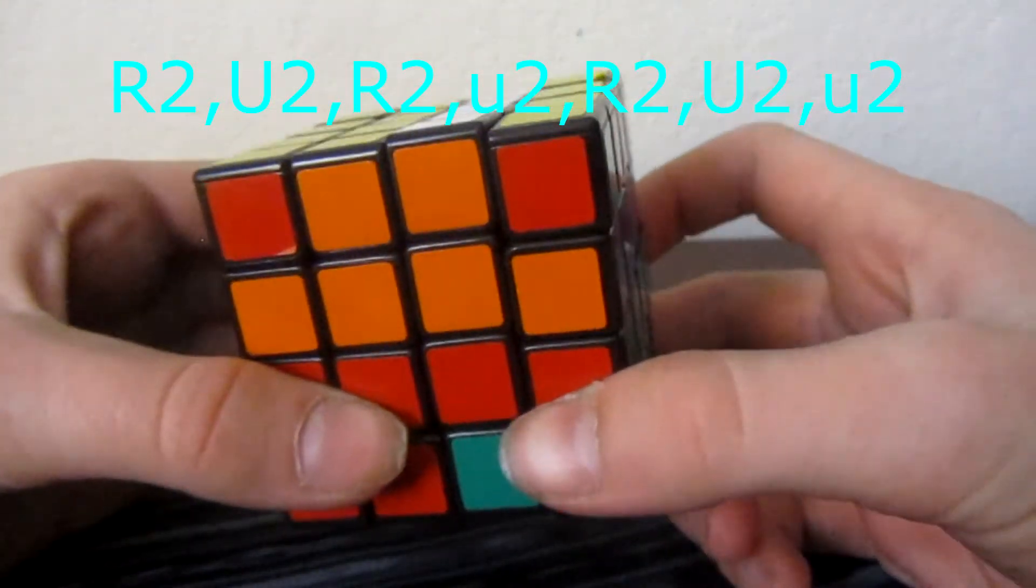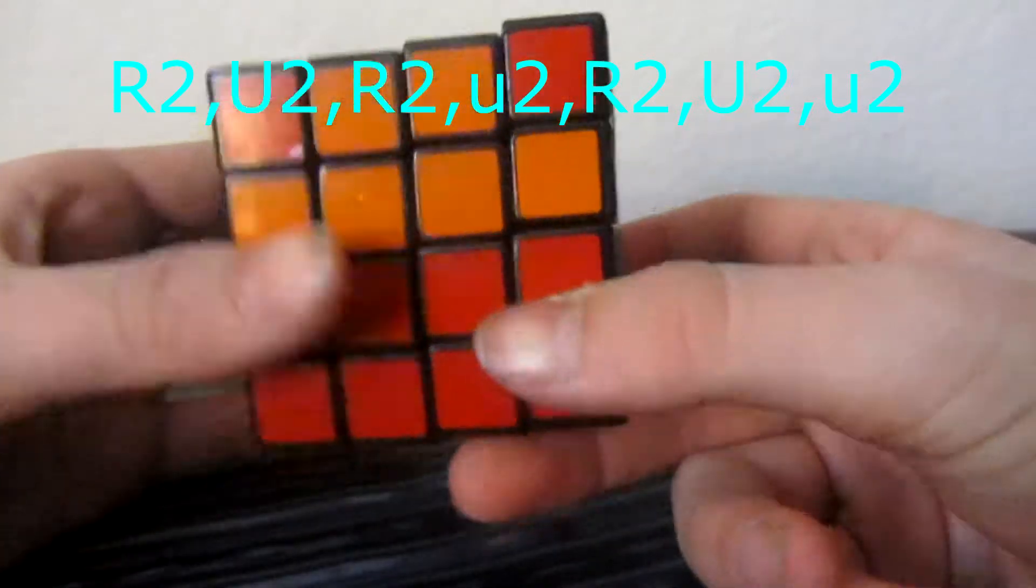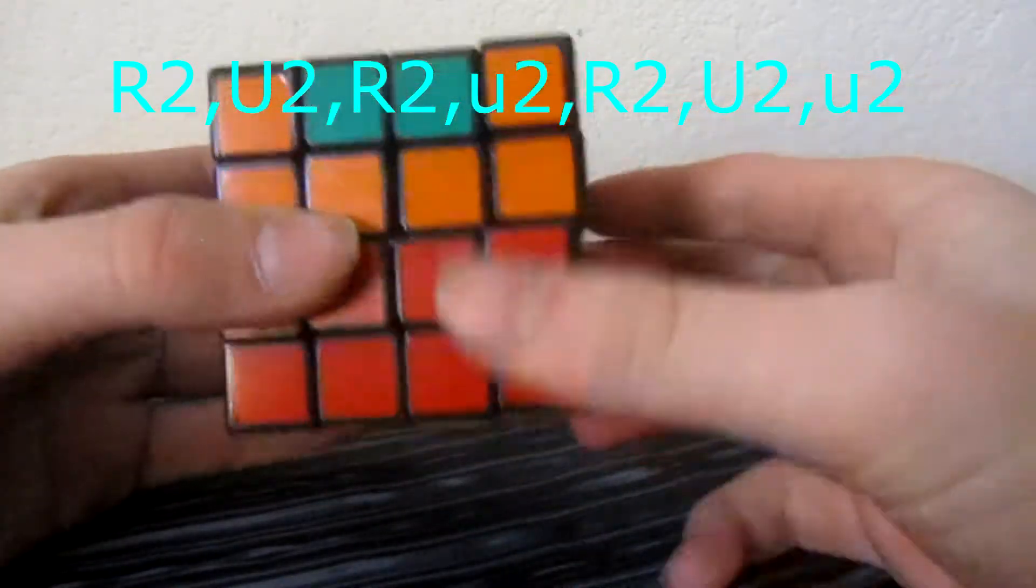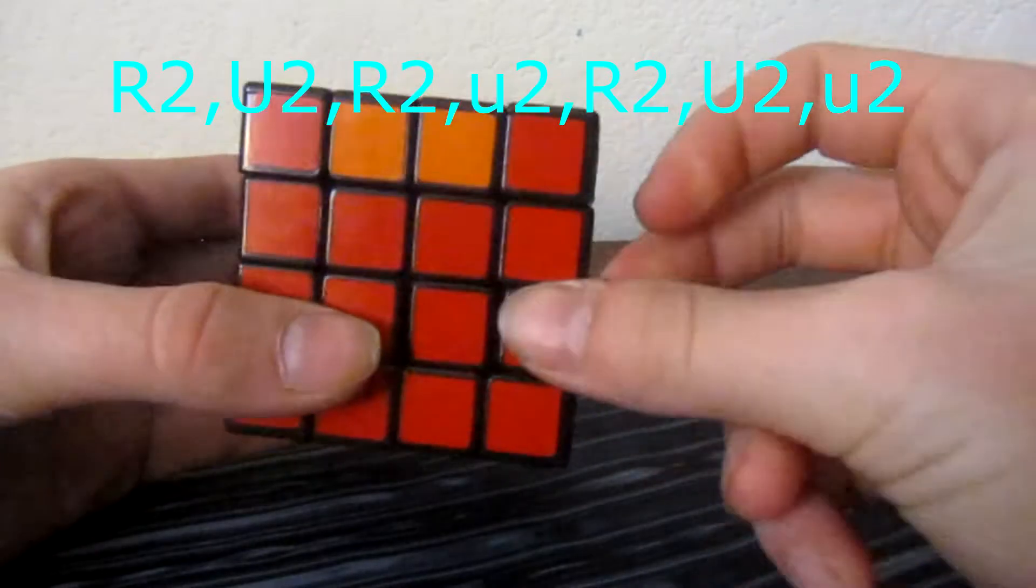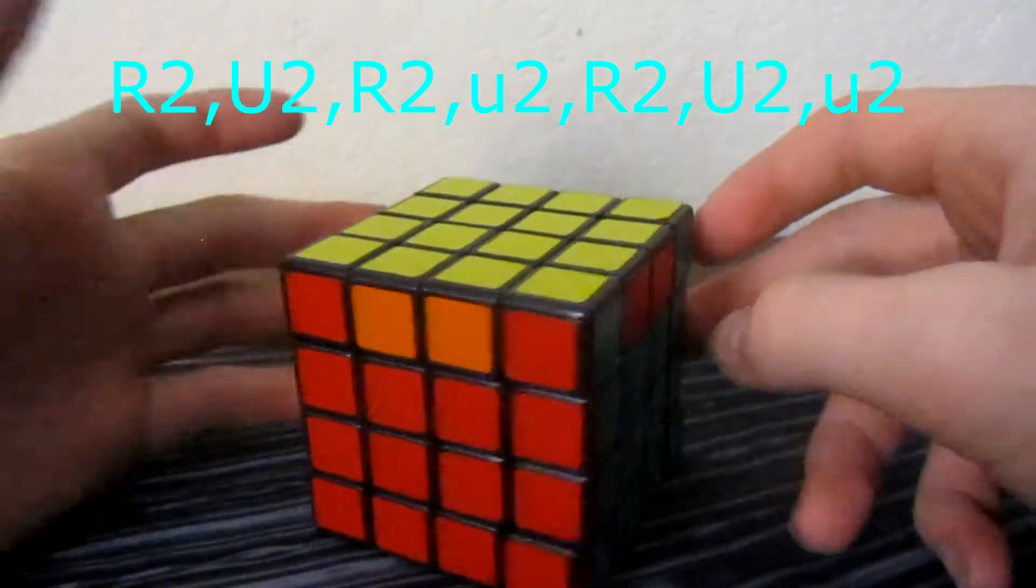Then you're going to move both layers twice. Then you're going to move the R up again. You're going to move the top and then both. And there you go, you have it to the case that you should like it to be.